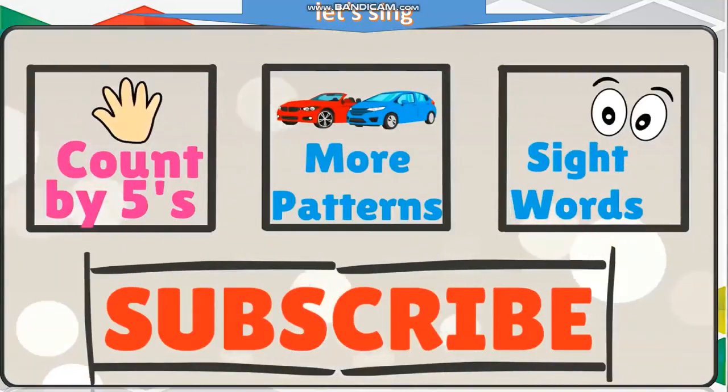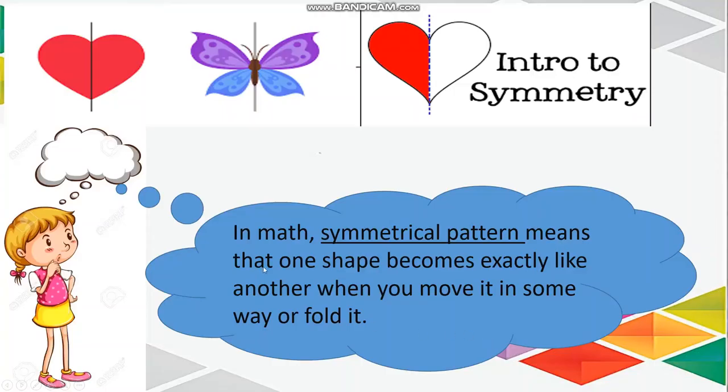Remember to like and subscribe. Here children, we will learn about another type of pattern, which is the symmetrical pattern. What is the symmetrical pattern? Yes, it means that one shape becomes exactly like another one. When we move it in some ways or fold it, they are exactly same.